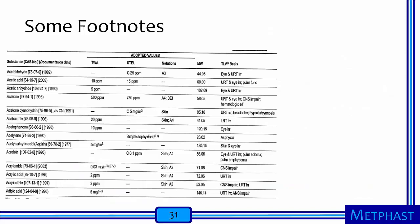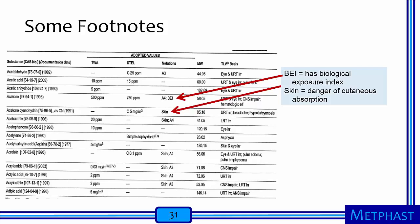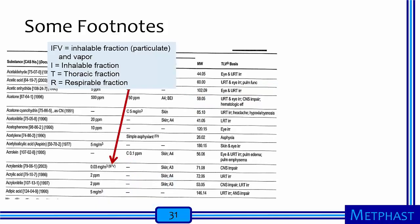Here is another page from this booklet discussing important footnotes. A1 through A5 indicates varying levels of human carcinogenicity, where A1 is a confirmed human carcinogen and A5 is not suspected as a human carcinogen. BEI means there is a biological exposure index for this substance. Skin means danger of cutaneous or dermal absorption. C means the value is a ceiling limit. IFV means the value is for inhalable fraction and vapor. I means inhalable, T means thoracic, and R means respirable — we'll talk more about that in the sampling lecture.